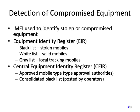Operators are very concerned about fraud. One way to deal with fraud is to detect compromised equipment. The IMEI is used to identify stolen or compromised equipment. The IMEIs of stolen or compromised devices can be stored in the Equipment Identity Register, or EIR, which has a blacklist of stolen mobile devices, a whitelist of valid mobiles, and a graylist. Operators also maintain something called a Central Equipment Identity Register, which contains approved mobile types and a consolidated blacklist so that a stolen phone can't be used on another operator's network.